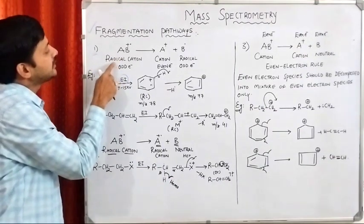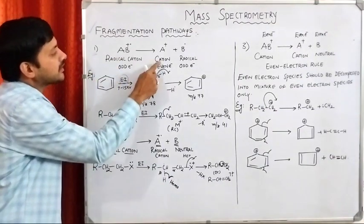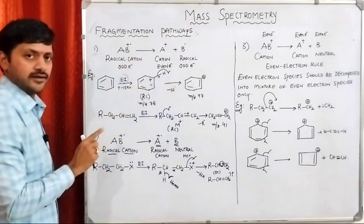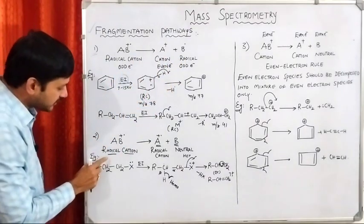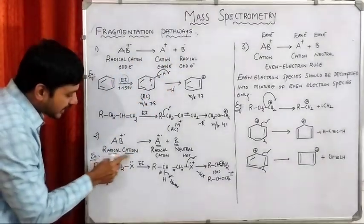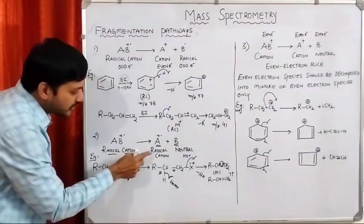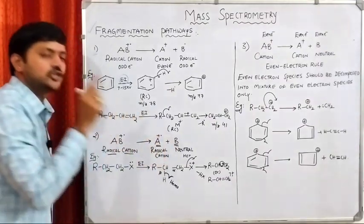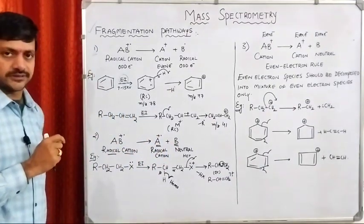To summarize: in the first case, radical cation is converted into a cation plus a radical. In the second case, radical cation is converted into a radical cation plus a neutral molecule.